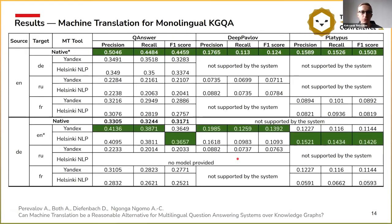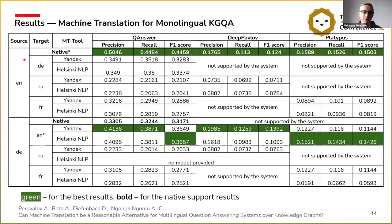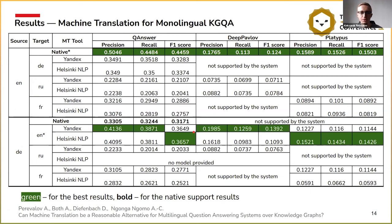Here are the actual results for machine translation applied to monolingual knowledge graph question answering. We show only a portion of the table here — for two source languages — but we have nine source languages in total, and the full table is in the paper. Green cells mark the best results; bold values mark native support results. For English, it was always the best strategy to use the original questions rather than translate to German, Russian, or French. However, for German, native support was not the best — it was actually better to translate original German questions to English, despite systems that support German existing. Machine translation improved quality not only for German but for all other languages as well.